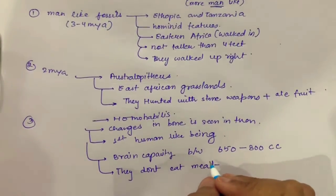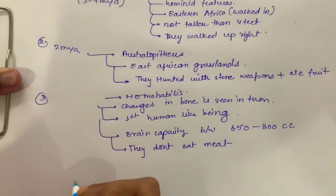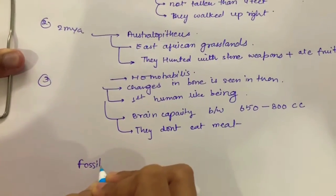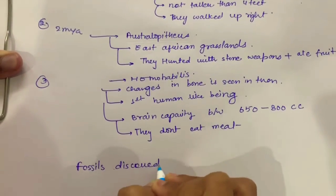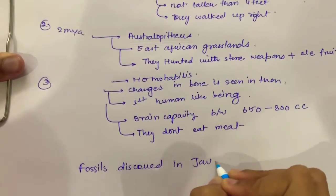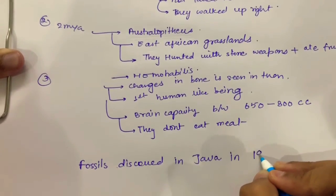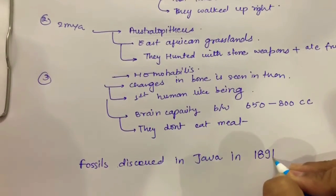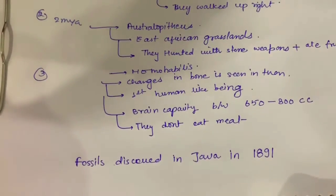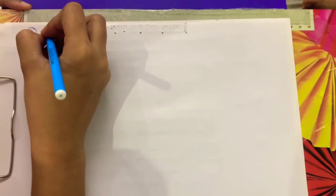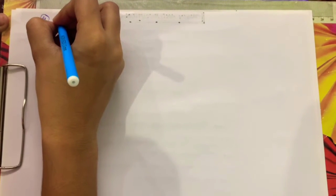There is one important line written in NCERT - please underline this line. Fossils discovered in Java in 1891 revealed the next stage. After the discovery of fossils in Java, we have the next stage 1.5 million years ago, and they were Homo erectus.